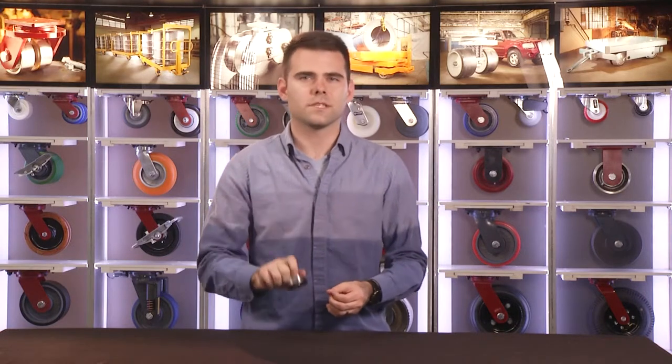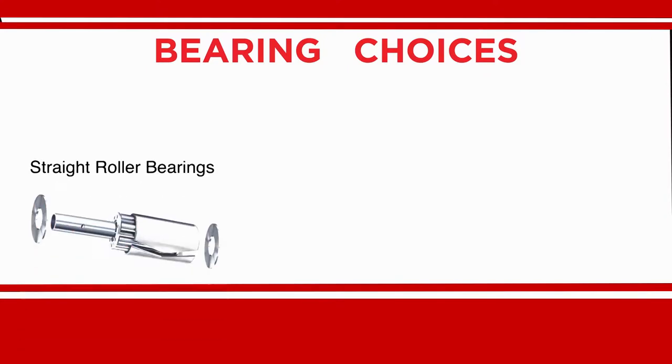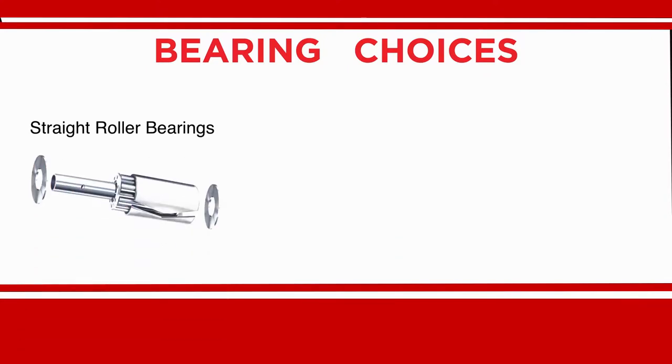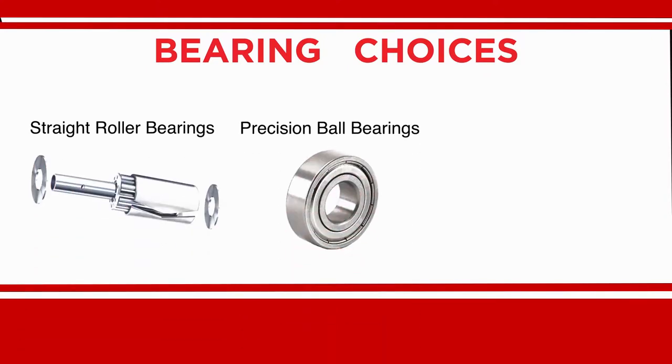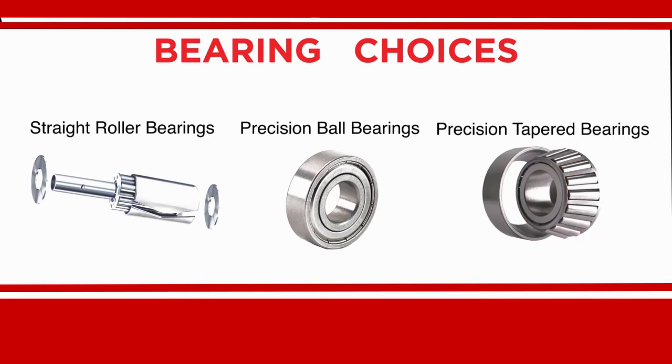The component that allows a wheel to roll easily is the bearing. Hamilton predominantly uses three types of bearings in its wheels: straight or needle roller bearings, double-sealed precision ball bearings, and precision tapered roller bearings.